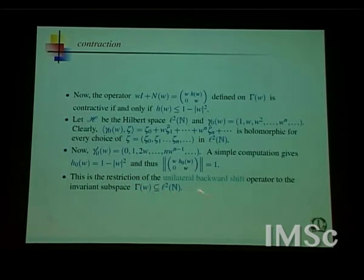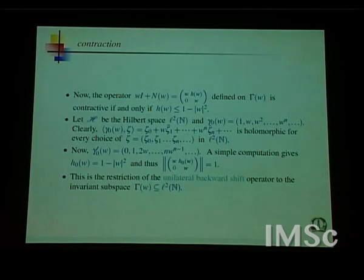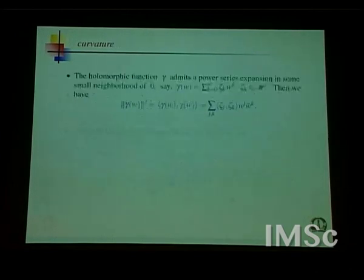To recapitulate: we begin with the unilateral backward shift, we have a whole family of two-dimensional subspaces, we restrict the backward shift to this two-dimensional space, and we get these 2×2 matrices — each one of them has norm 1. But the point is that instead of picking this particular operator, you could pick a more general class of operators, find the corresponding two-dimensional spaces, restrict the given operator, get an inequality, and study the relationship of that inequality to the main operator.